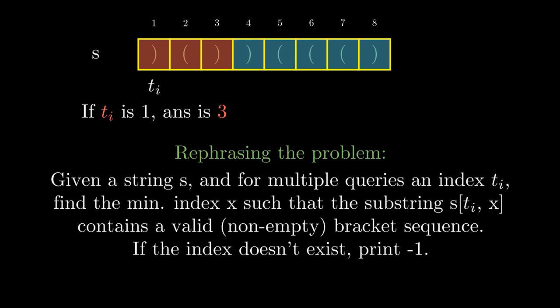Also note that since in our subsequence we need to have as many opening brackets as there are in the substring from ti to n, we cannot remove any opening brackets. So in fact, we need to find a substring and not a subsequence.